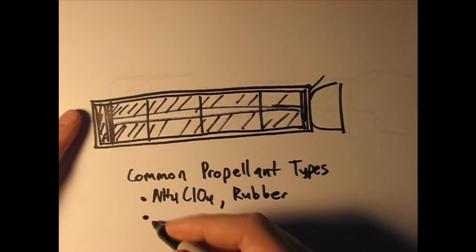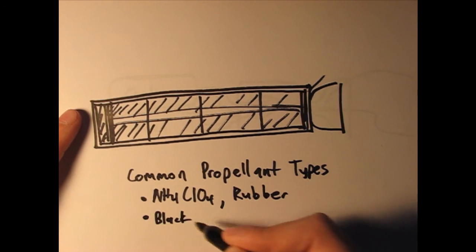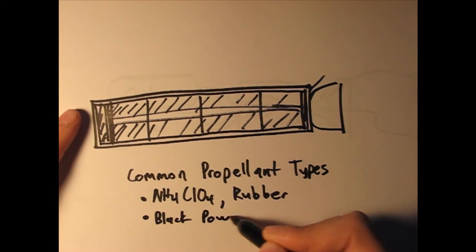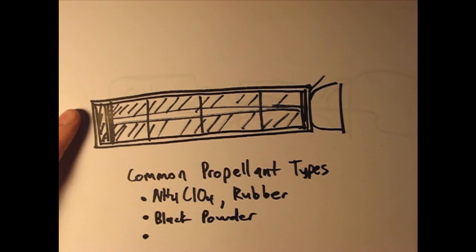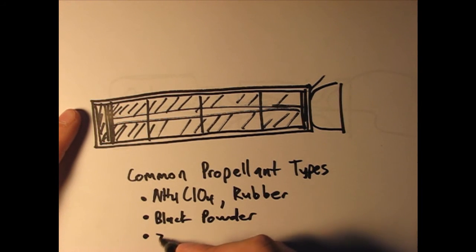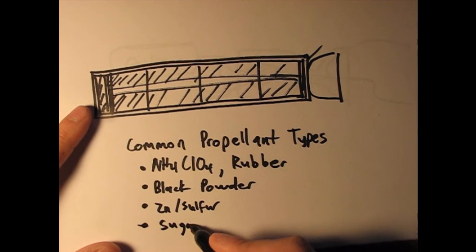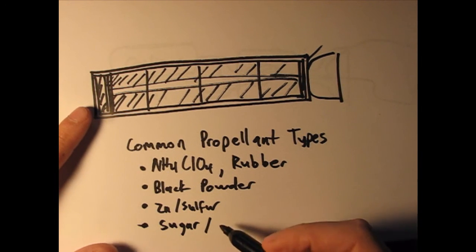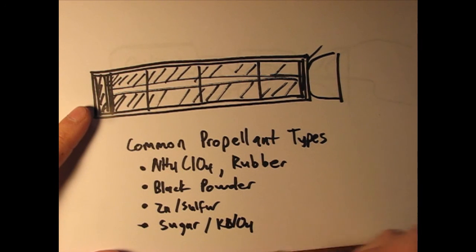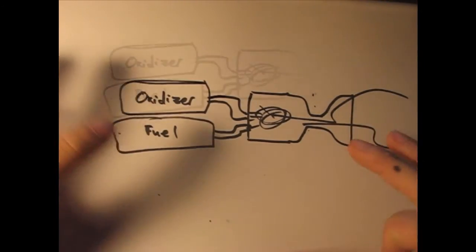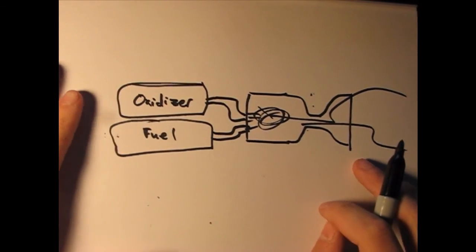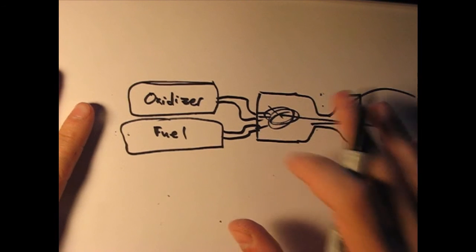We also have, well, black powder is still used in really small model rocket motors. There's also zinc and sulfur and actually sugar and something like potassium nitrate. So propellants.